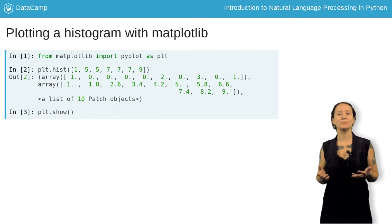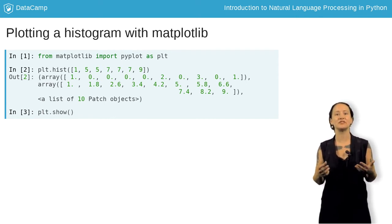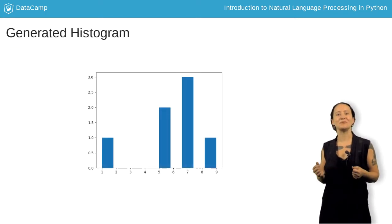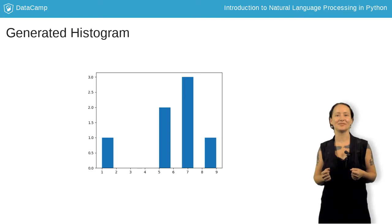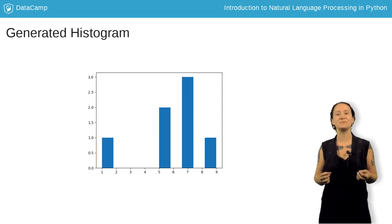Finally, we call the plot.show function, and Matplotlib will show us the generated chart in our system's standard graphics viewing tool. This is the chart that we generated using the previous code. We noticed that it has determined proper bins for each entry, and we can see that the 7 and 5 bins reflect the distribution we expected to see.